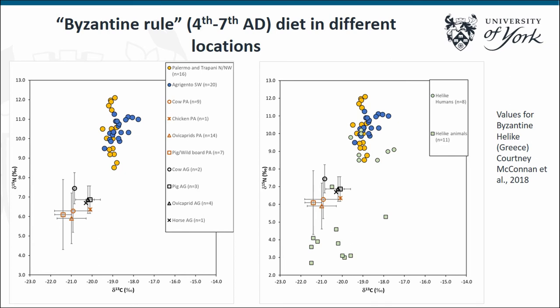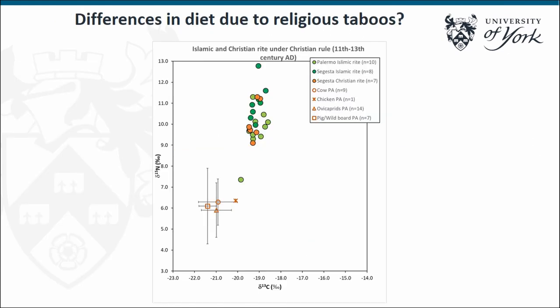One of the most interesting findings is the Byzantine-rule diet at different locations. In blue you see individuals from Agrigento in the southwest of the island, and in yellow, Palermo and Trapani. Some individuals from Agrigento show enriched Delta 13C values. This may be due to different reasons: one could be the consumption of C4 crops as seen in other populations — but the problem is these are Byzantine-rule Christian individuals. A more likely explanation may be seafood consumption.